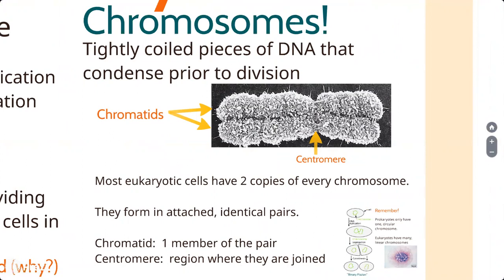Eukaryotic cells have a lot of DNA - if you stretched out the DNA from one cell's nucleus, it would be roughly three to four feet long. DNA is rather delicate and can physically break if mishandled. So DNA is very densely packaged into structures called chromosomes during mitosis and meiosis. The DNA is tightly coiled and wrapped around certain proteins that give it structure, allowing it to move from one side of the cell to the other without being damaged.